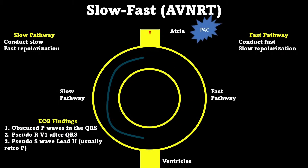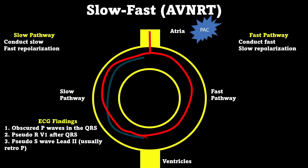In our slow-fast AVNRT, we have our fast and slow pathways like before, but in this example, we have an ectopic PAC which comes into play. Ectopic premature beats occur before our next scheduled beat. Because the fast pathway has a longer repolarization time, it will be refractory initially to the impulse. The impulse will head down the slow pathway, go down to our ventricles, and then up the fast pathway because at this point the fast pathway is able to be stimulated. This creates a re-entry circuit, with anterograde conduction down the slow pathway and retrograde conduction up our fast pathway.